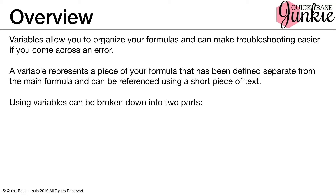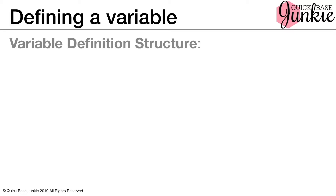Using variables can be broken down into two parts: defining the variable and calling the variable. The variable definition structure looks like this. There's a short piece of text, VAR, followed by the type, and then the name with an equal sign, followed by your formula, and then a semicolon. Let's look at each of these parts.